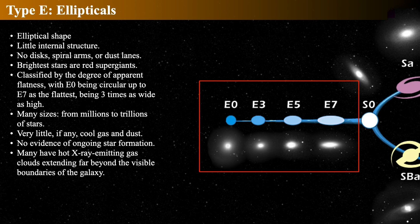Ellipticals are classified only by their apparent flatness. A circular-looking one is an E0, and one that's really wide compared to its height — flat or cigar-shaped — is an E7, about three times as wide as it is high. The numbers are based on the ratio of the long axis to the short axis. Ellipticals come in huge size differences, from some with trillions of stars down to tiny dwarfs with only a few million stars. They contain no gas and dust and no evidence of star formation, but giant ellipticals tend to have large clouds of hot X-ray-emitting gas extending far beyond their optical boundary.